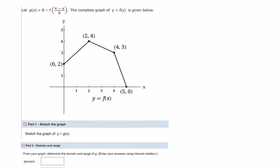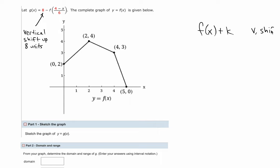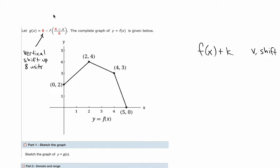Let's take a look at the formula and see what kind of transformations are occurring. Here we see an 8 that is alone — that's going to be a vertical shift, up 8 units because it is positive, following the rule of f of x plus k being a vertical shift of k units. We also see a negative applied to the outside of the function f, which is a vertical reflection, following the rule of negative f of x.